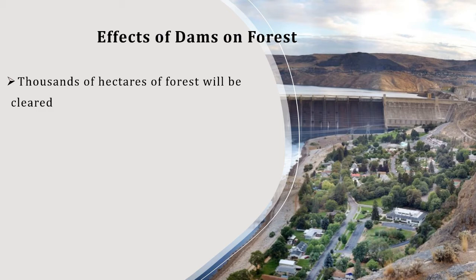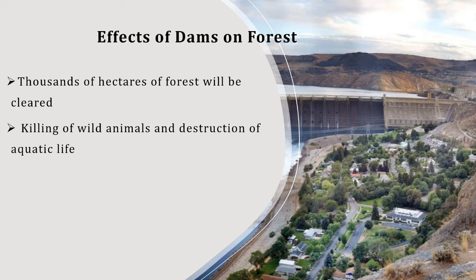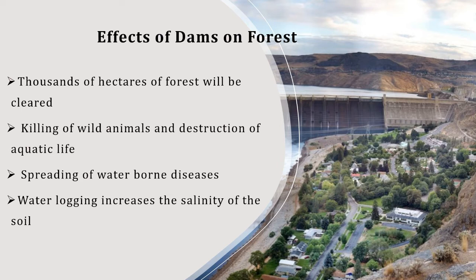Effects of dams on forests: thousands of hectares of forest will be cleared. Clearing of wild animals and destruction of aquatic life occurs. Waterborne diseases spread. Water-logging increases the salinity of the soil. For example, the Narmada Sagar project has submerged 3.5 lakh hectares of forest, showing that so many hectares of forest are cut down for the construction of big dams.